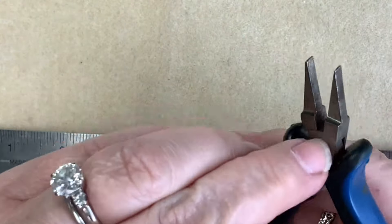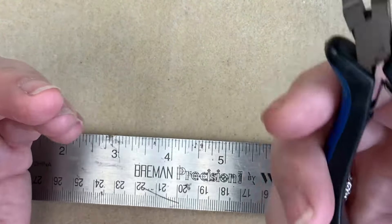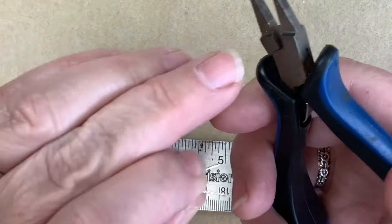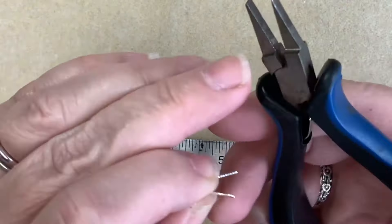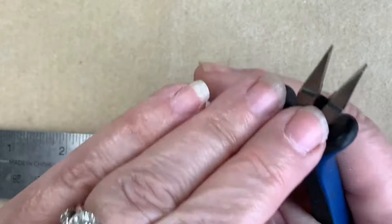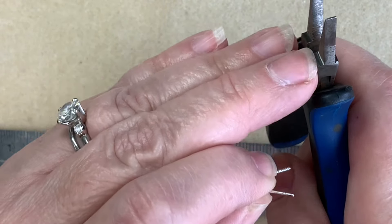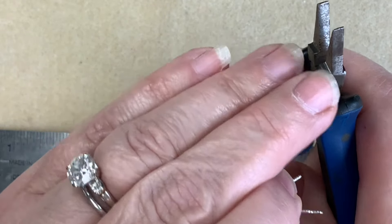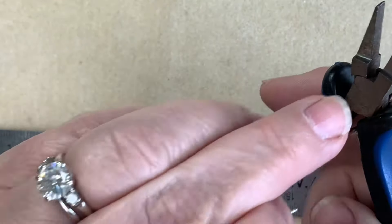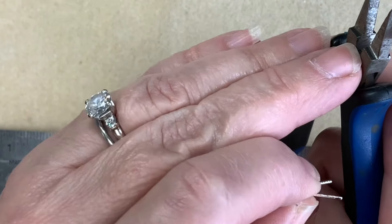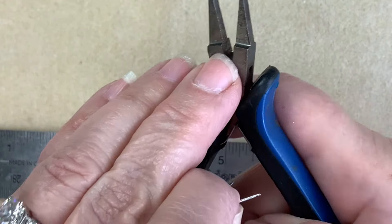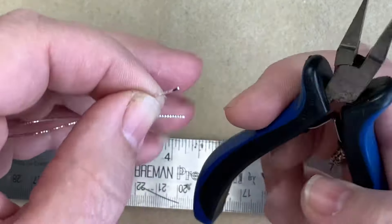This part back here, see where the pliers have a squared off area where the joint is? We're actually going to put it in this joint and that's going to give us enough torque to flatten the wire.